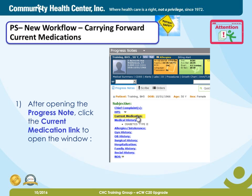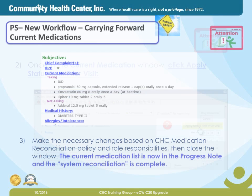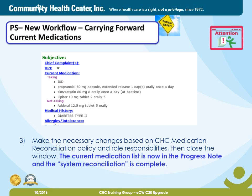Step 1: after opening the progress note, click the current medication link to open the window. Step 2: once in the current medication window, click Apply Status from Prior Visit to bring in the medications. Step 3: make the necessary changes based on the CHC medication reconciliation policy and your responsibilities, then close the window. The current medications list is now in the progress note and the system reconciliation is complete.